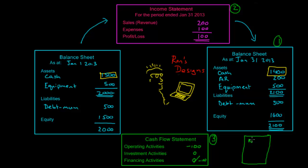The notes basically provide further explanations of both his accounting policies — how and when he would record certain items — as well as providing more details into things such as the debt to his mom: how much it was, when it is due, and any interest owing on it. And that would be the last component of the financial statement.